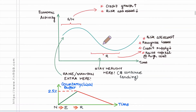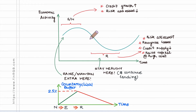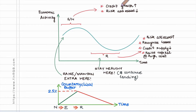Let us say I were to plot economic activity over time — this is the kind of graph I will observe, showing some kind of cyclical behaviour. During the expansionary or normal period, banks collectively speaking would observe an accelerated growth in the credit that they extend to borrowers.